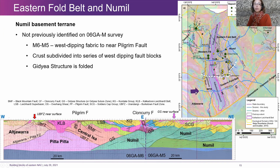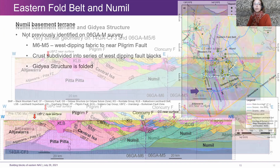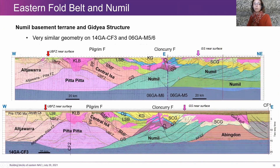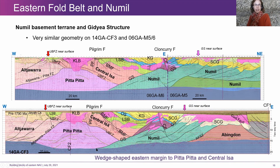The next slide shows the CF3 line and the M6 line together, and the geometry is remarkably similar. We've got very good constraints on the location of the Gidja structure at depth — between 10 and 15 seconds. Those west-dipping reflections are quite continuous and truncate east-dipping reflections. In the upper crust above six to seven seconds you can again see east-dipping reflections in the Soldiers Cap Group truncated by west-dipping structures, and you can see this wedge-shaped geometry to the eastern margin of both Pitta Pitta and Central Isa.